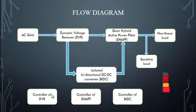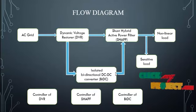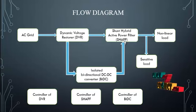These three blocks control every block system. Switching pulses are given to the DVR, isolated bidirectional DC to DC converter, and hybrid shunt active power filter. We use sinusoidal pulse width modulation and alpha-beta to DQ transformation to give pulses to these three blocks. This is very important to get perfect power delivered to the load and reduce line losses and harmonics.